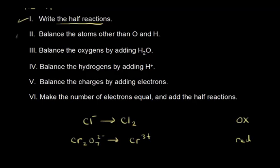Step two: balance the atoms other than oxygen and hydrogen. In our oxidation half reaction, we have one chlorine on the left and two chlorines on the right, so we put a 2 on the left. In the reduction half reaction, we have two chromiums on the left and only one on the right, so we put a 2 on the right. Step two is done.